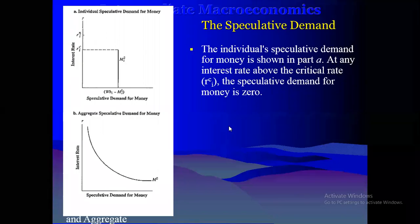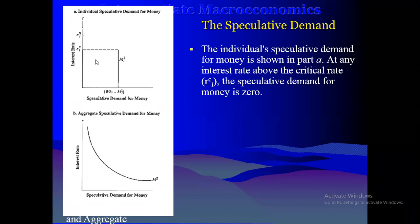We're looking at the speculative demand for money. This is called the critical interest rate — the level at which people are at least willing to hold some amount of money. Assuming you increase the interest rate even by the smallest amount above the critical rate, no one is going to hold any money at all, because at this point people believe the interest rate is high enough.